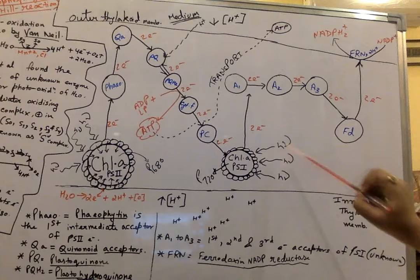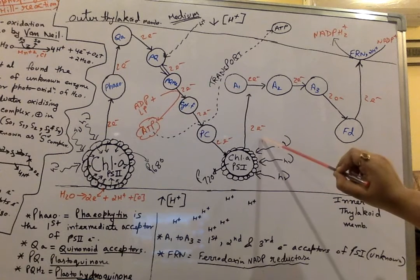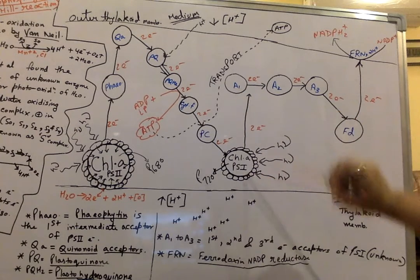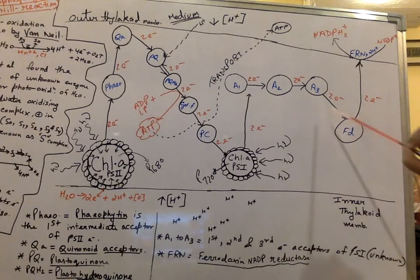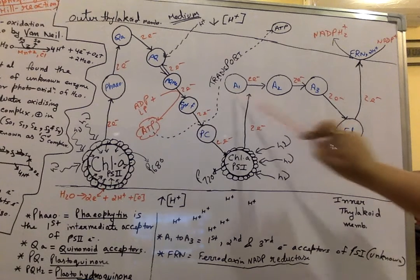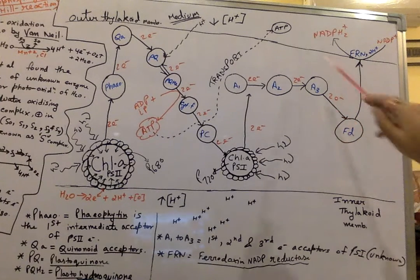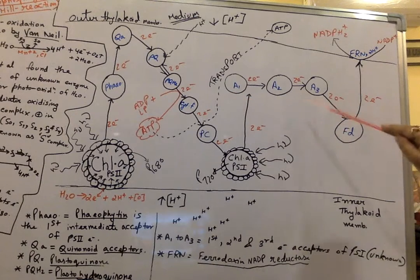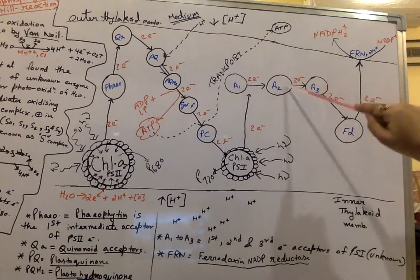From PS1, along with the absorption of light energy, electrons will be sent to the first electron acceptors of PS1, which are A1, A2, and A3. These electron acceptors are essentially unknown — not very well characterized. Electrons will flow from A1 to A2 to A3.